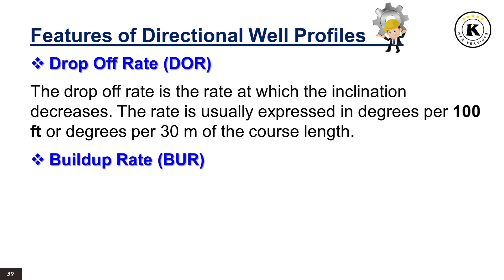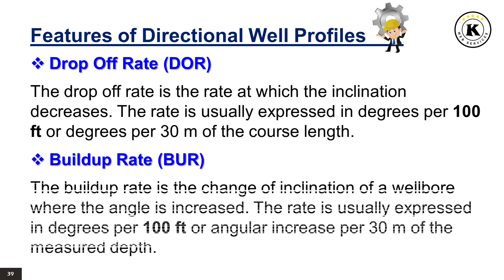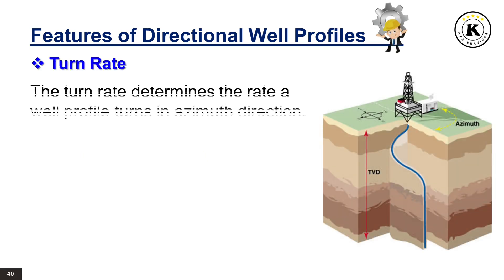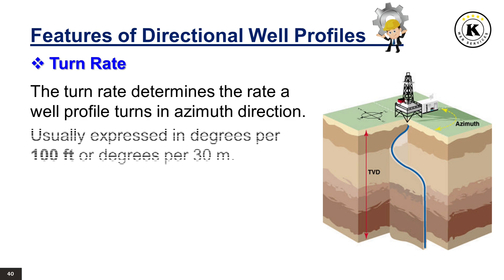Buildup Rate: The buildup rate is the change of inclination of a wellbore where the angle is increased. The rate is usually expressed in degrees per 100 feet or angular increase per 30 meters of the measured depth. Turn Rate: The turn rate determines the rate a well profile turns in azimuth direction, usually expressed in degrees per 100 feet or degrees per 30 meters.